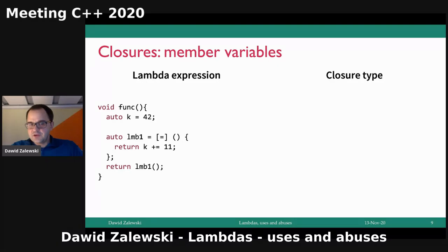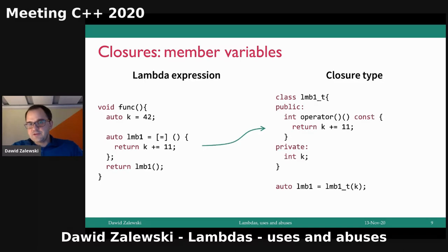Last but not least: captures. The Lambdas shown so far didn't contain any captures, but more often than not you will capture something into your Lambda — local variables, for instance. What the compiler generates is a closure type with data members corresponding to the captured variables. Since I captured k by value, there will be a data member in my closure type initialized with the value of the captured variable — 42 in this case. When you try to compile this piece of code, it's not going to work.